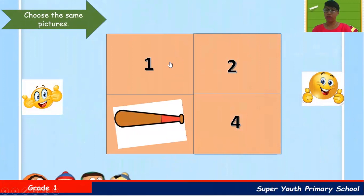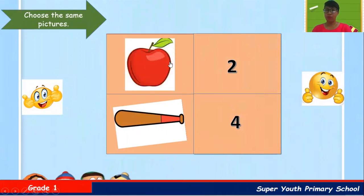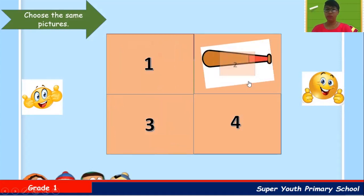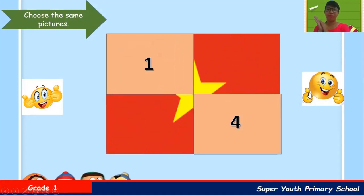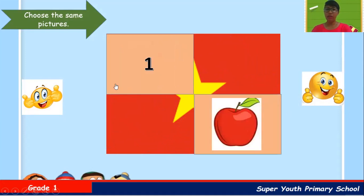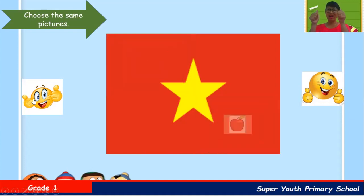I open number one — it's an apple. It's different. I open number two — it's a bat. You remember number one or number three is bat. Number three. Well done. I open number two and open number one. Good job. Can you see?